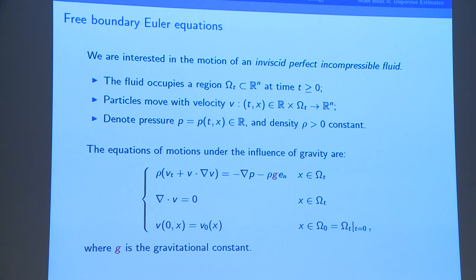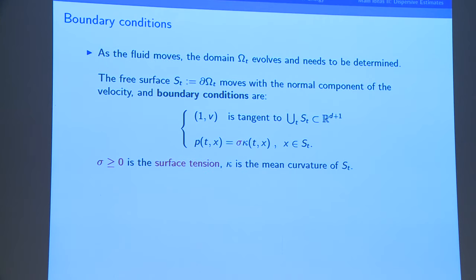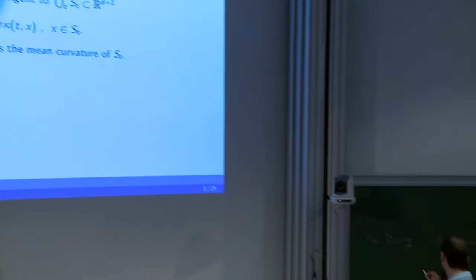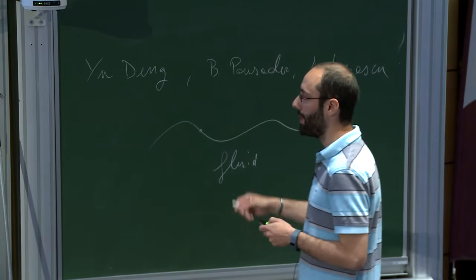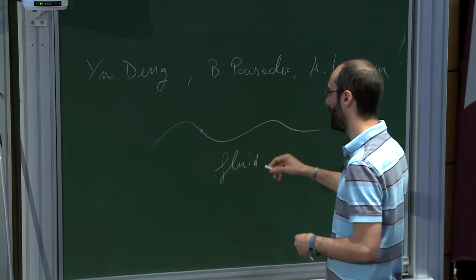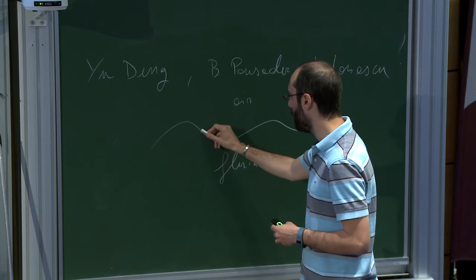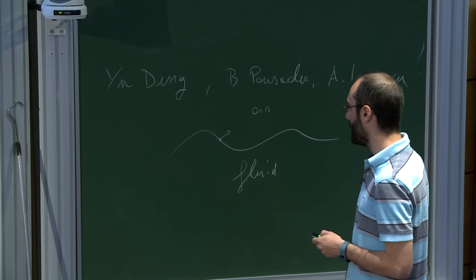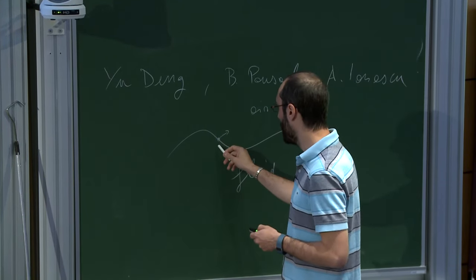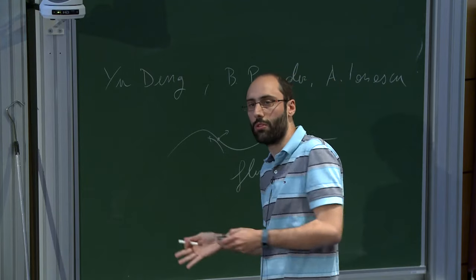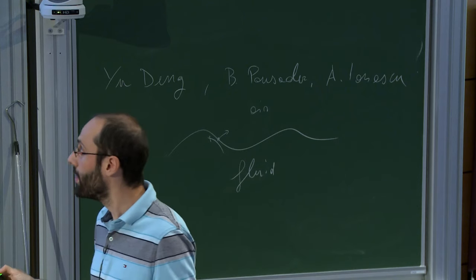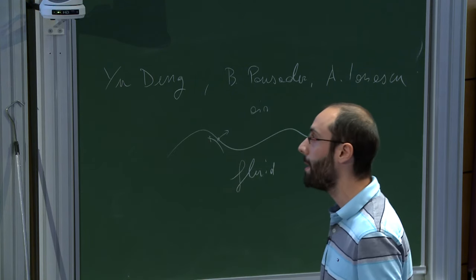As the fluid moves, the domain is moving consistently, in the sense that particles on the boundary will always be on the boundary. The boundary moves in the direction given by something proportional to the normal component of the velocity. So if the velocity is tangential, there will be no motion; otherwise, the velocity of the particles inside will push the fluid to move. This is expressed by: v is tangent to the union of the spacetime boundaries.